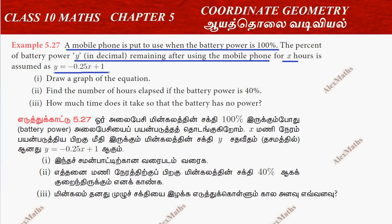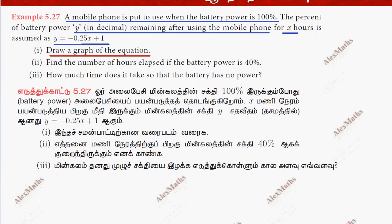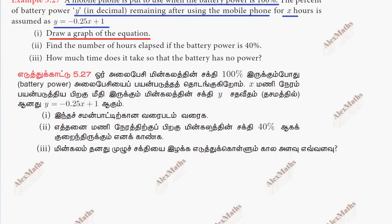First part is to draw the graph. This is a linear equation, so on the equation graph draw. We can rewrite: y is equal to minus 0.25x plus 1.